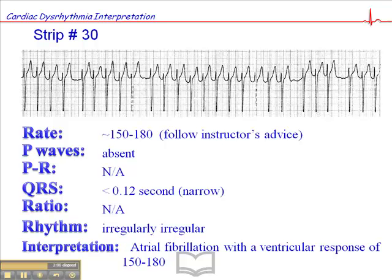So what might look like a regular beep-beep-beep-beep on the paper, when you listen to it, it's more like an irregular beep... beep.. beep... beep.. beep. beep... beep.. beep, with varying intervals between beats. So you'll definitely hear that auditory clue that it's irregularly irregular.